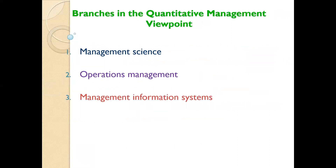These are the branches of quantitative management, which include management science, operations management, and management information systems. These are the three branches of the quantitative management viewpoint, which we will discuss one by one.